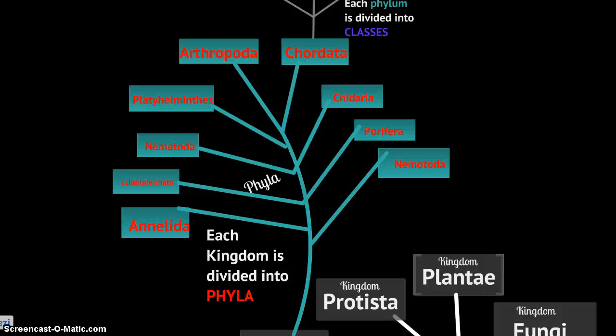Additional animal phyla include Arthropoda — things with jointed limbs like crabs and insects; Chordata — organisms with a notochord, which includes us and all mammals; Cnidaria — jellyfish; and Porifera — sponges. There was a labeling error in the presentation, but these are the large phylum divisions in kingdom Animalia.